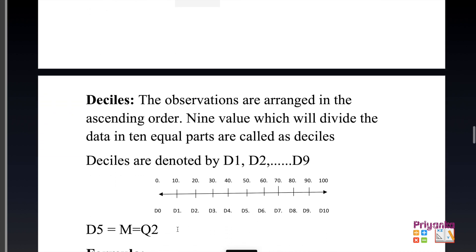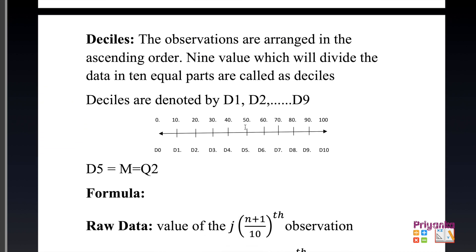Another positional average is the decile. When observations are arranged in ascending order, the 9 values that divide data into 10 equal parts are called deciles. The deciles are labeled D1 to D9. D5 is the center number, which equals the median and equals Q2, giving exactly 50%.